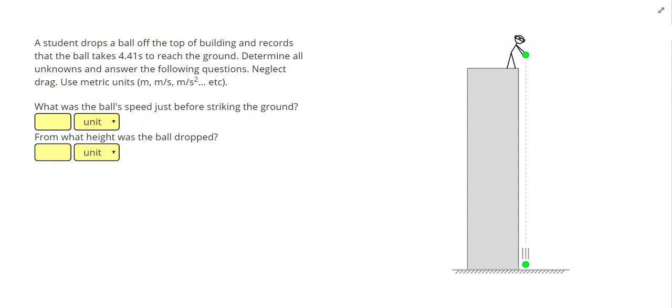A student drops a ball off the top of a building and records that the ball takes 4.41 seconds to reach the ground. Determine all unknowns and answer the following questions, neglect drag, and use metric units.